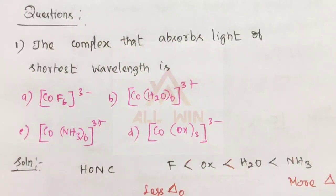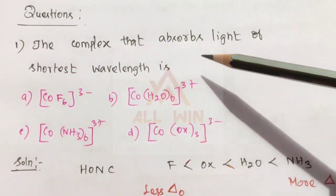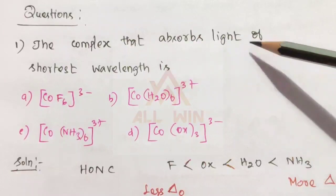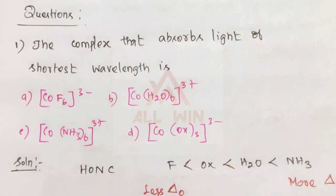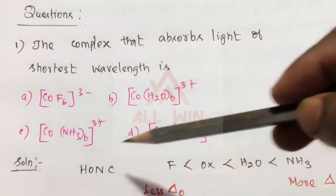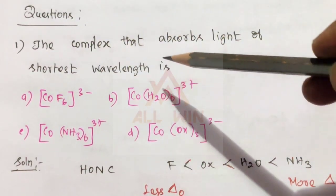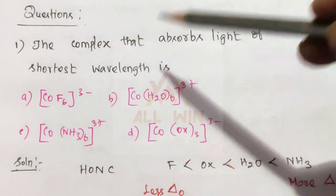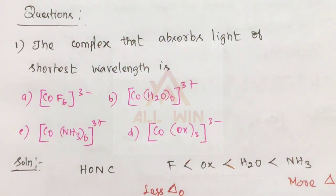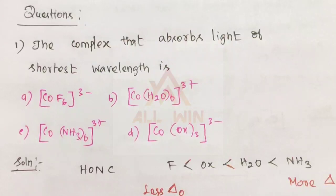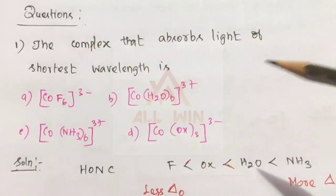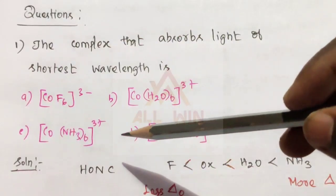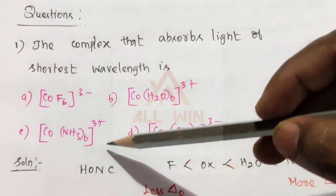First question: the complex that absorbs light of the shortest wavelength. Among these four complexes, which one will absorb the shortest wavelength? We will talk about the shortcut: H-O-N-C.